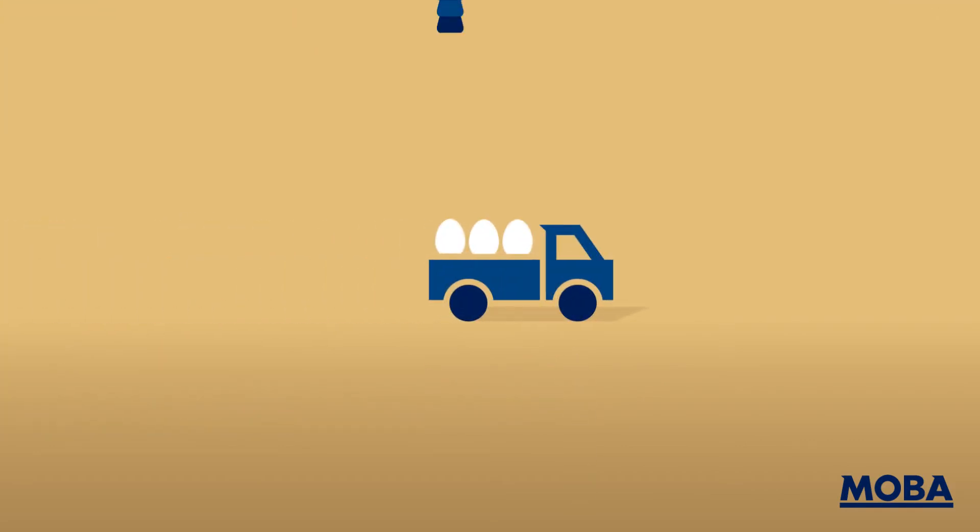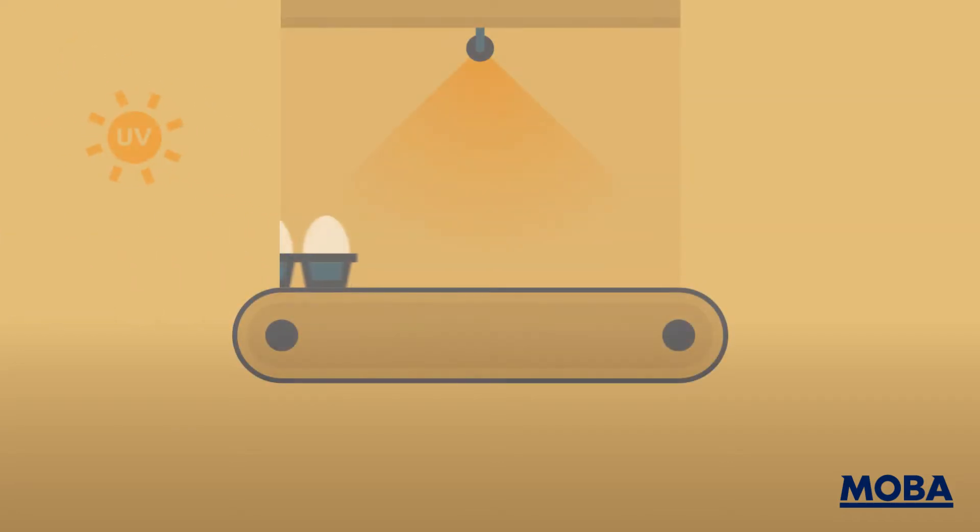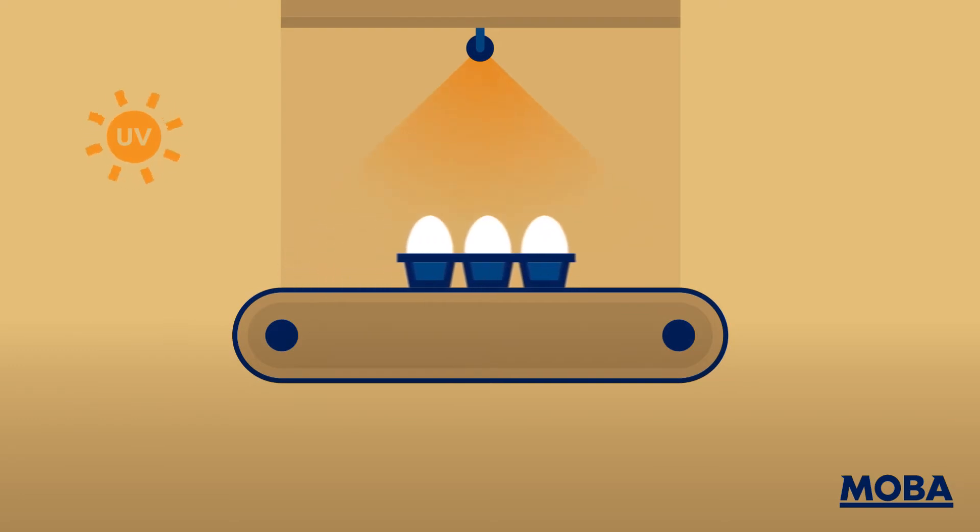Once in the plant, the vacuum suction cups in the loader are sanitized while operating. The eggs are sanitized without water and sanitizing product.